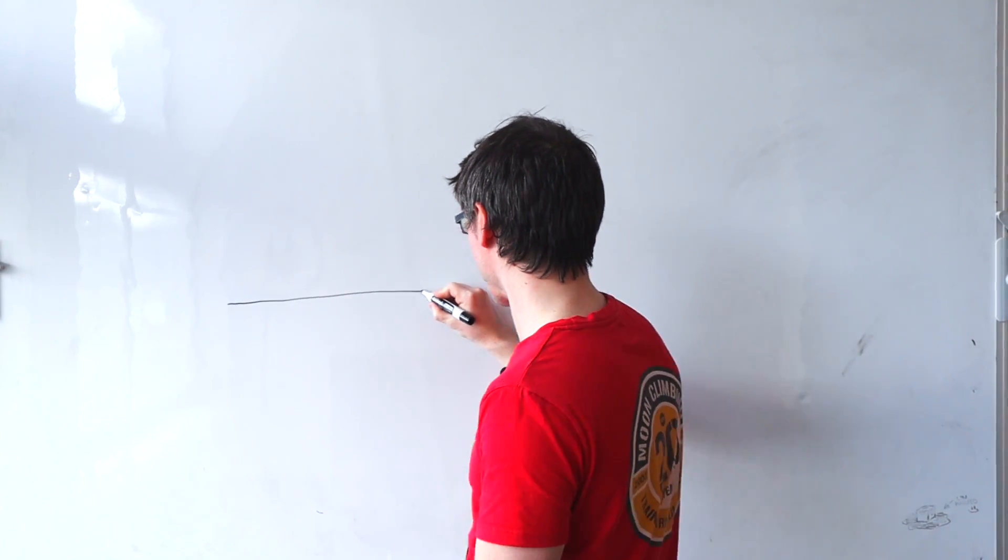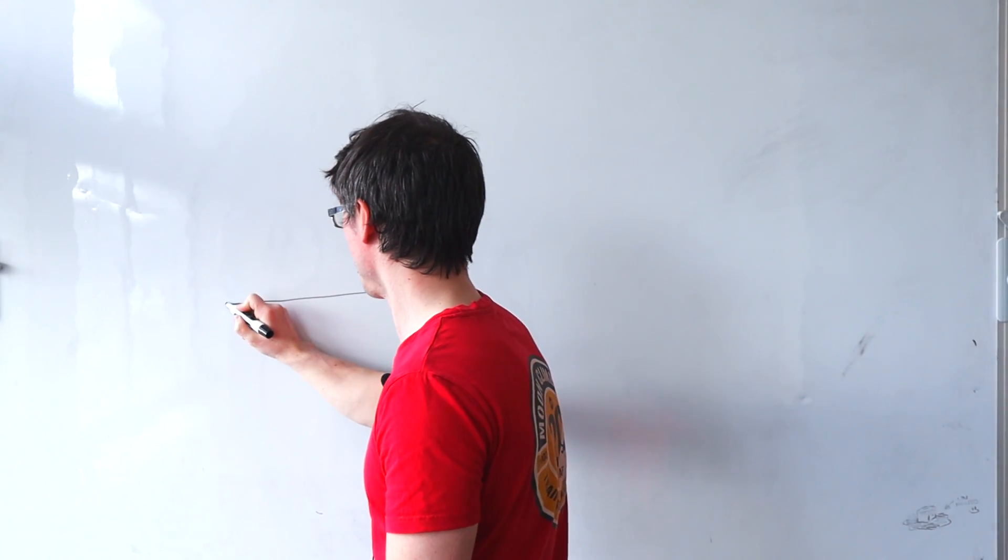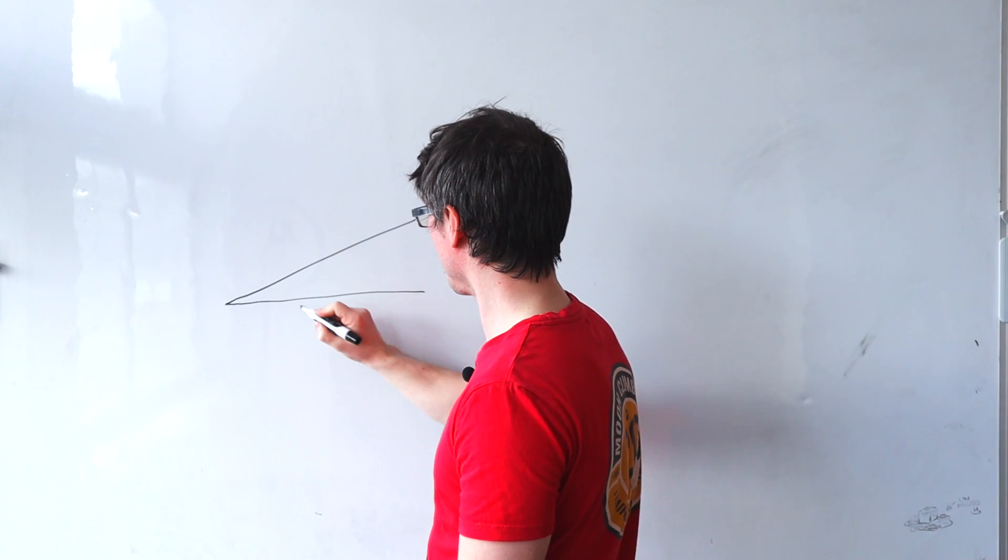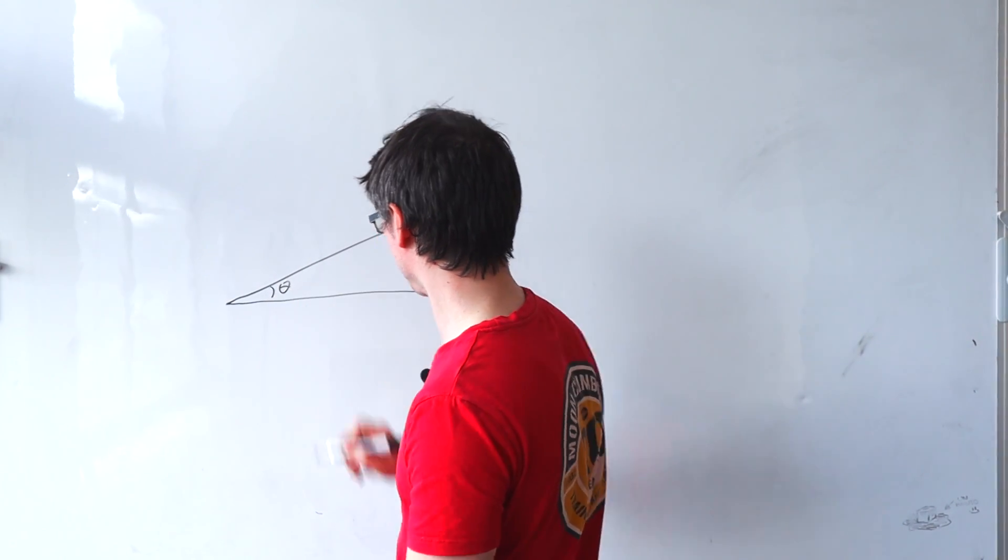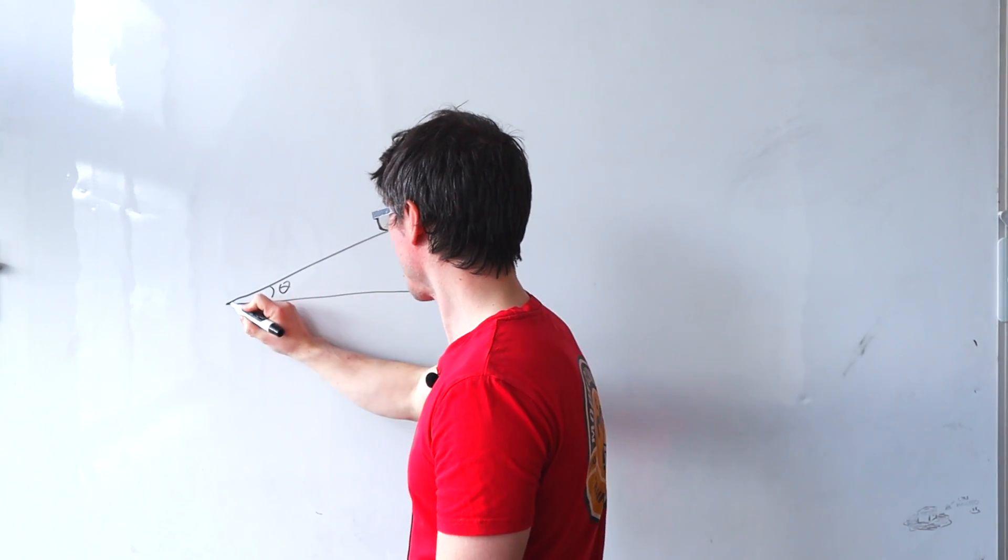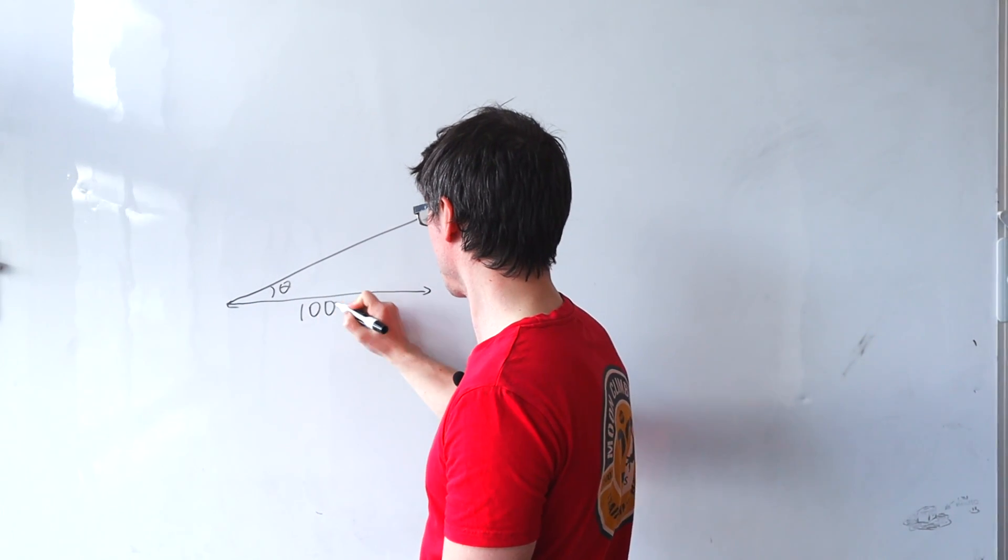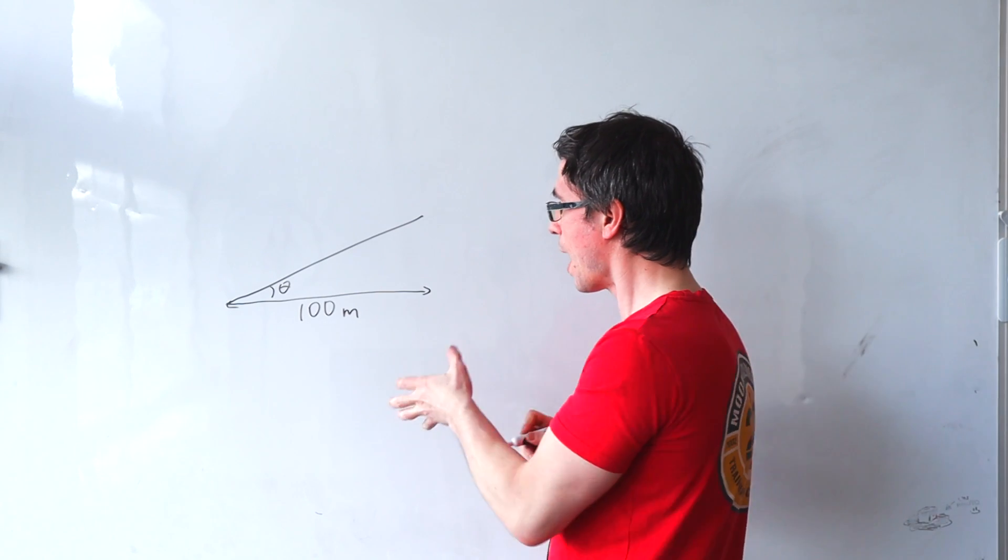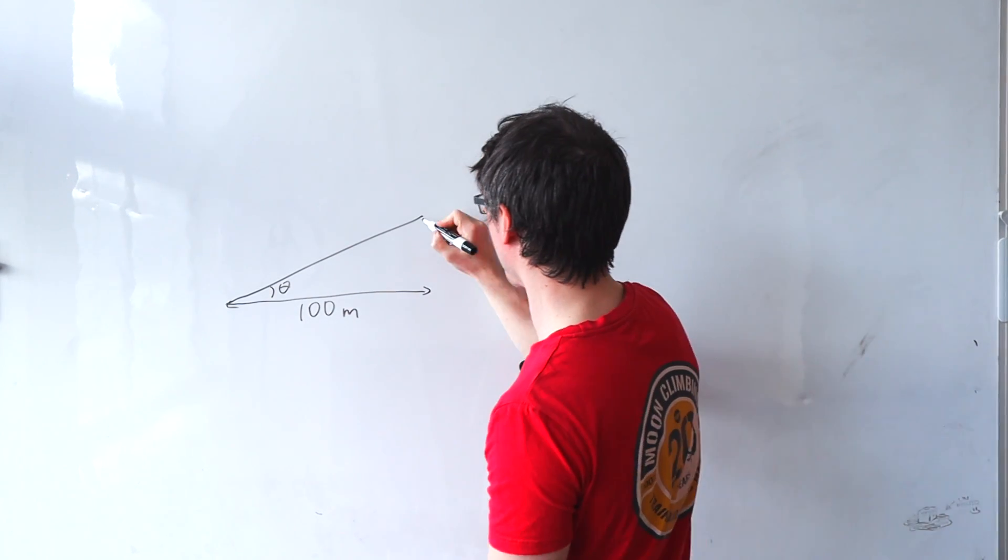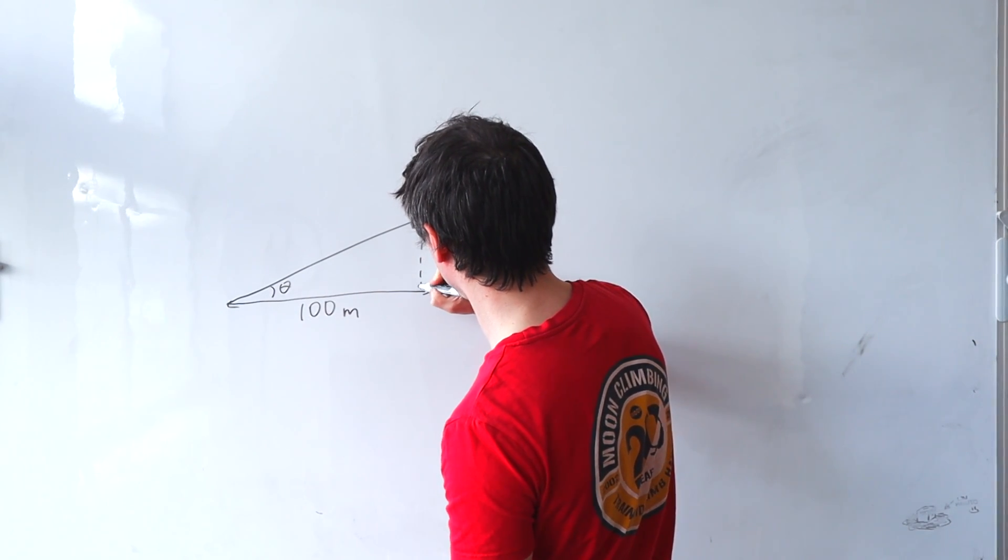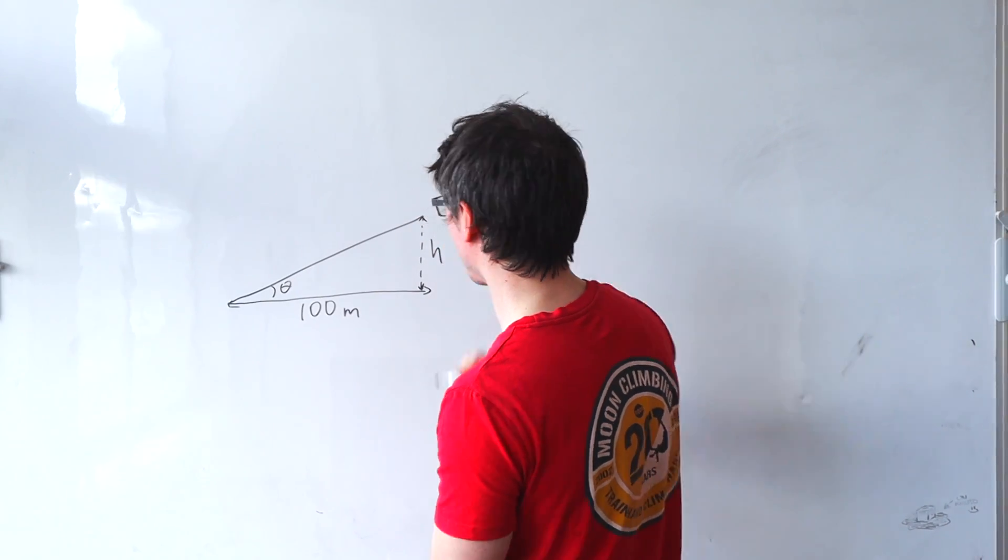So let's say that I have a slope and the angle of the slope is theta. Let's say that this horizontal distance here is 100 meters and we don't know the height, so I'm just going to say that the height is h.